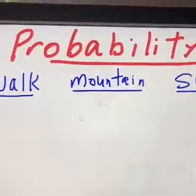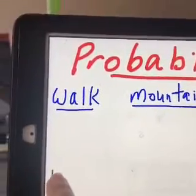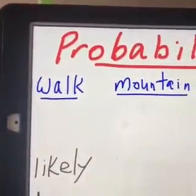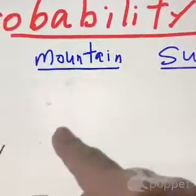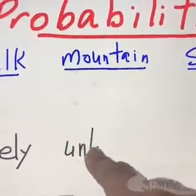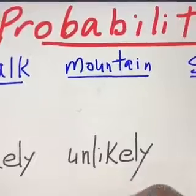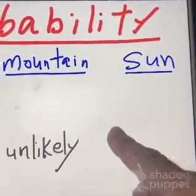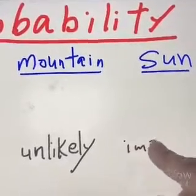Now let me write three words under these three words. The first one is Likely — l-i-k-e-l-y — Likely. The second one, under Mountain, is Unlikely — un-l-i-k-e-l-y — Unlikely. And under Sun, I'll write Impossible — i-m-p-o-s-s-i-b-l-e — Impossible.